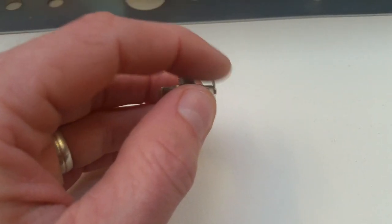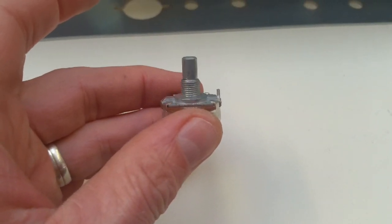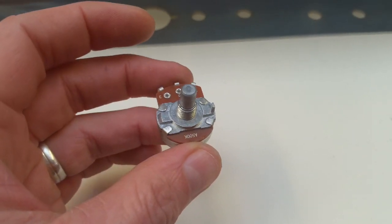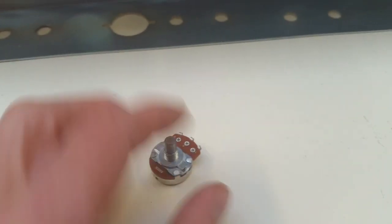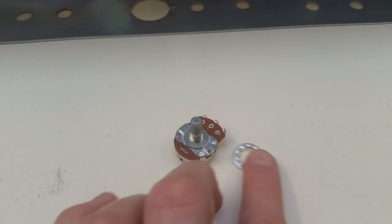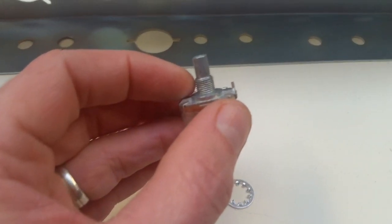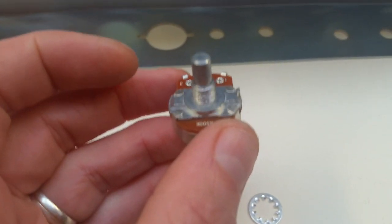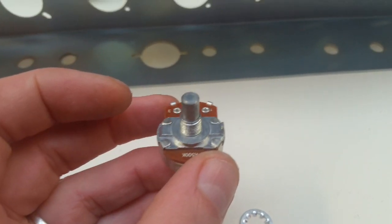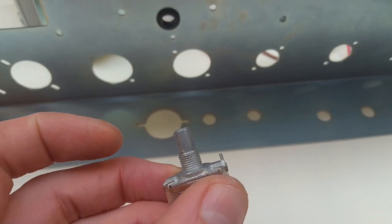Most pots come with a locating tab on them sticking up like that, and most people tell you to break them off when you're installing them and then to install the pot with a lock washer. The thing is that locating tab will stop the pot from rotating inside the chassis and will be a whole lot better than a lock washer if your chassis can take it.